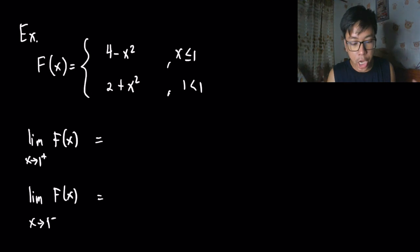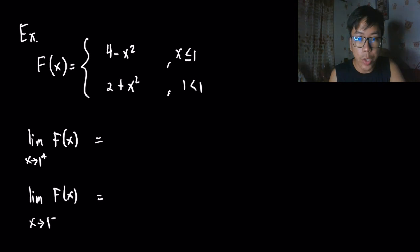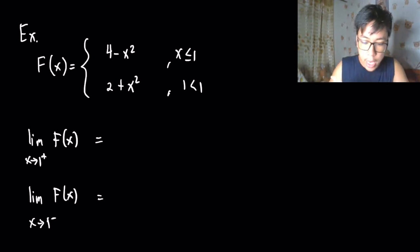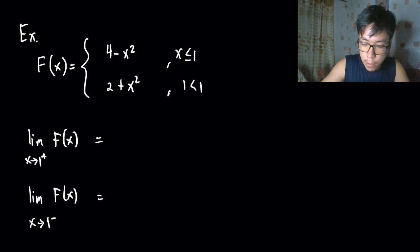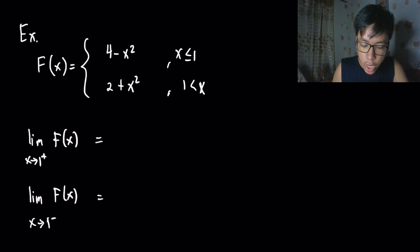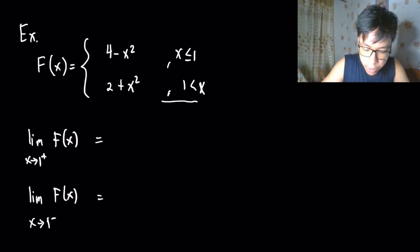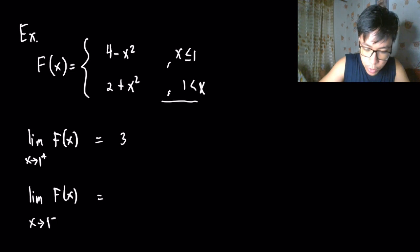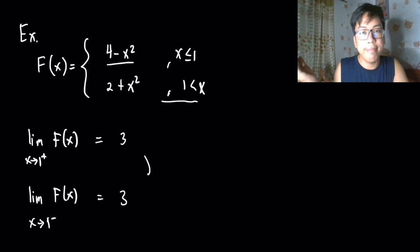Another example: f(x) = 4 - x² when x ≤ 1, and f(x) = 2 + x² when x > 1. From the right (x > 1), we use 2 + x²: 2 + 1 = 3. From the left (x ≤ 1), we use 4 - x²: 4 - 1 = 3. Both sides equal 3, so the limit exists.